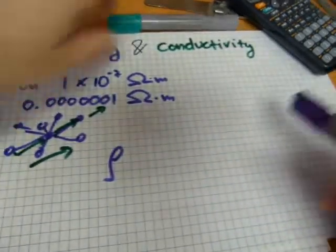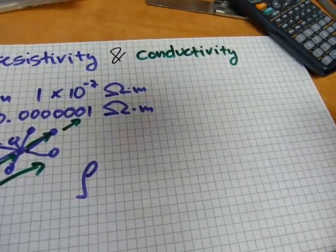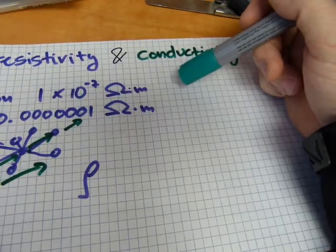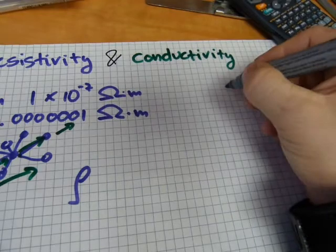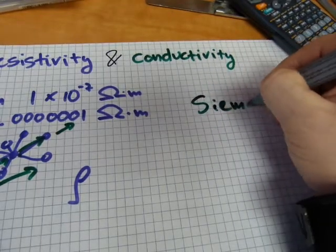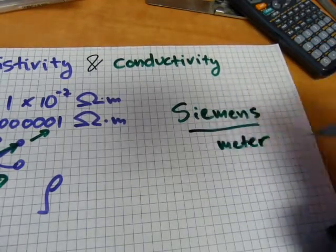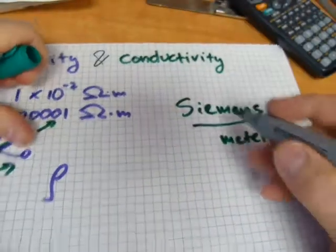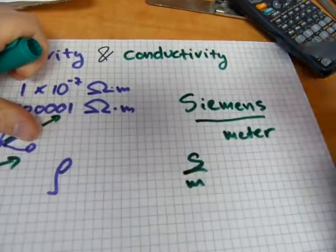Now, conductivity is, like I said, the mirror opposite or the reciprocal of it, and it shows you how easily the electrons go through this matter. And its unit of measurement is Siemens per meter. Siemens per meter. And that's the unit of measurement, so S over M.